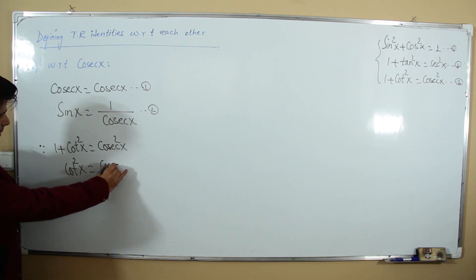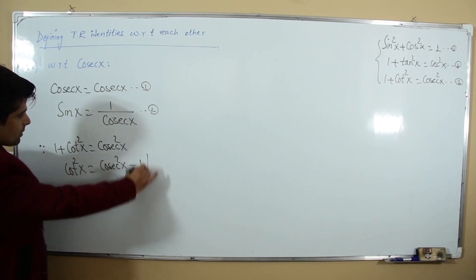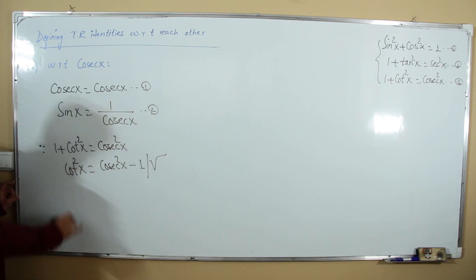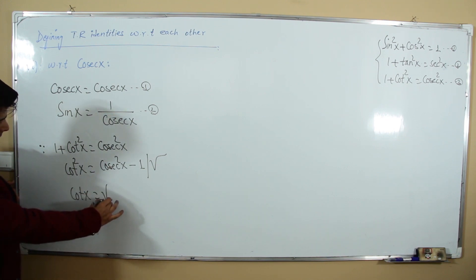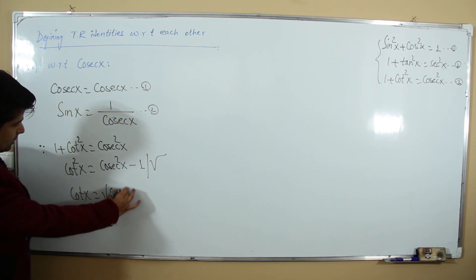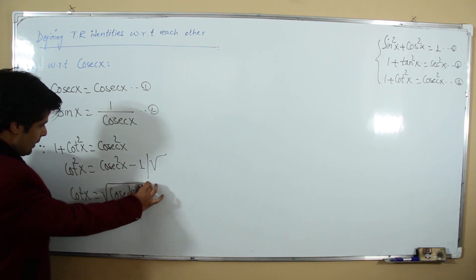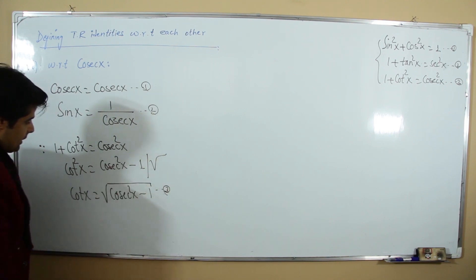Solving for cotangent: cot²x = csc²x - 1, so cot x = √(csc²x - 1). This is our third relation.